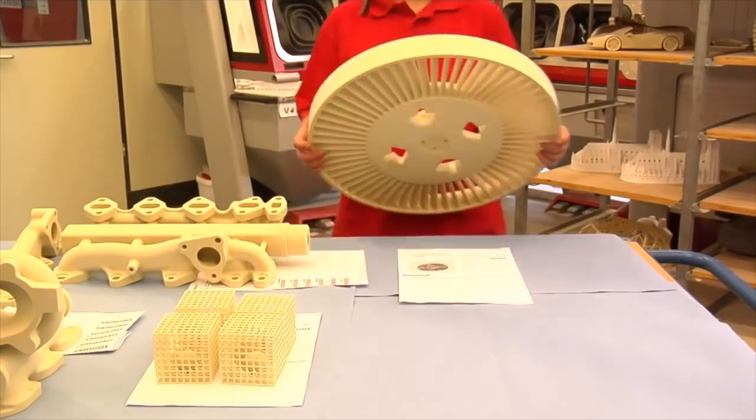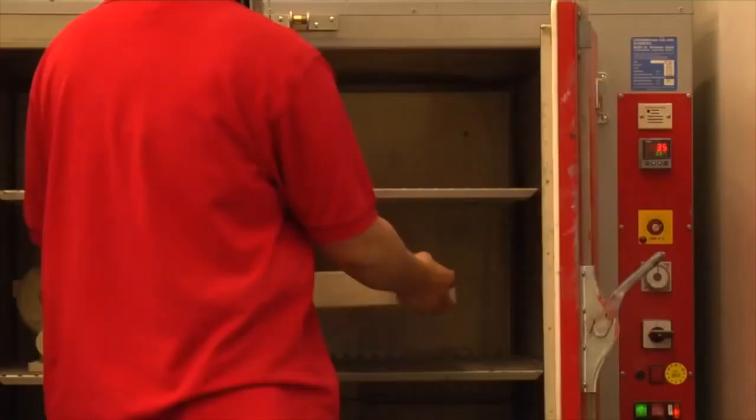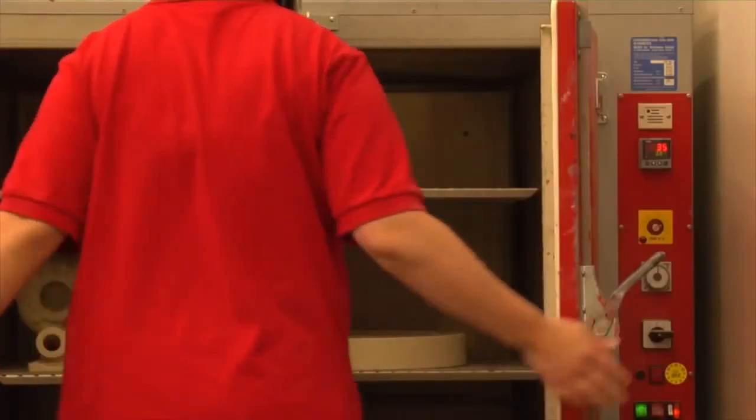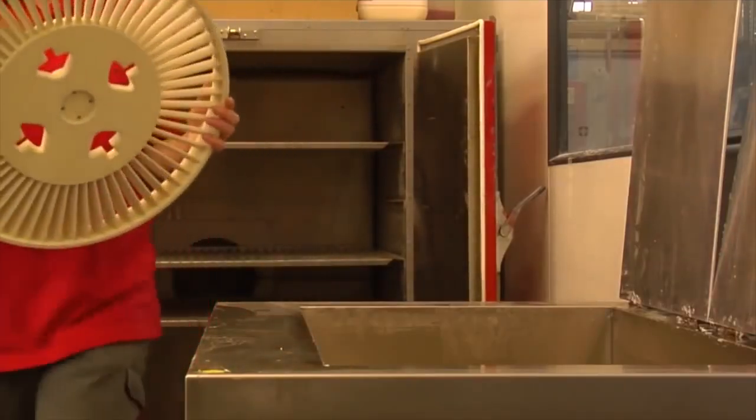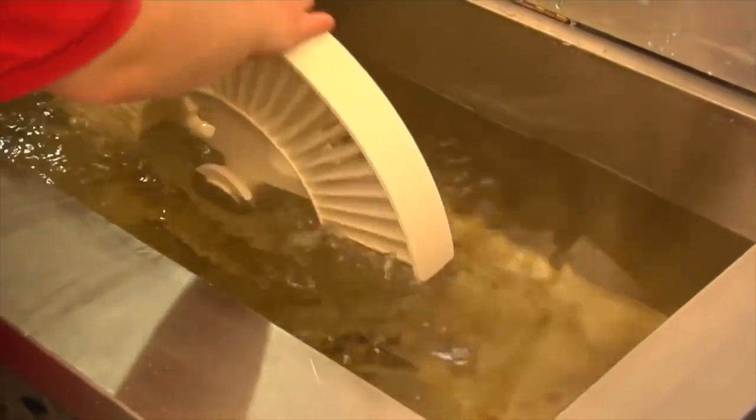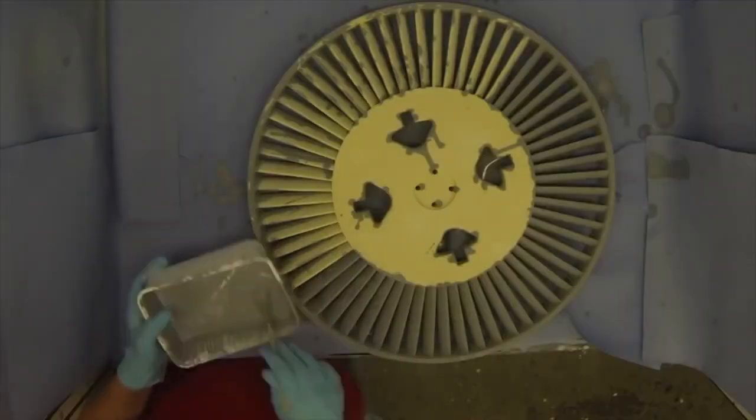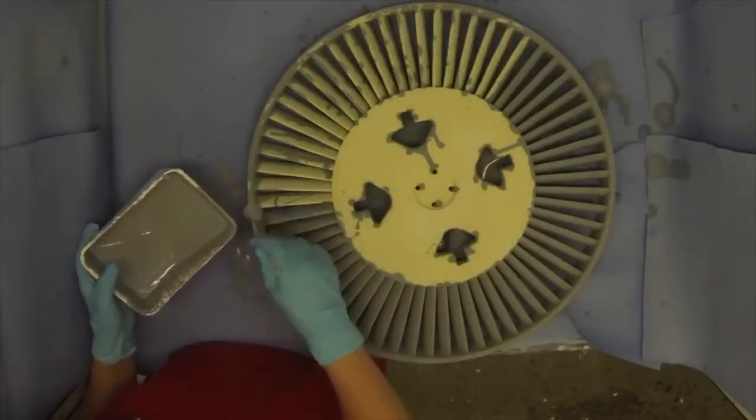The molds are characterized by maximum detail accuracy and precision. They reach their final strength in the furnace. For investment casting, the models are briefly immersed in wax to seal and smooth the surface. Design models are infiltrated with epoxy resin for added strength.